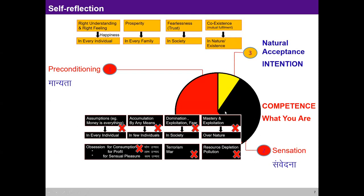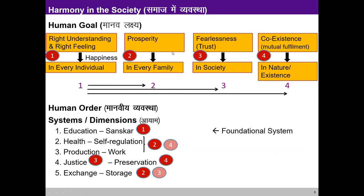Looking at the current state of society, we have landed somewhere that is certainly not naturally acceptable. Our natural acceptance is to have the human goal fulfilled: right understanding in every individual, prosperity in every family, fearlessness in society, coexistence in nature. But out of preconditionings and obsessions with sensations, we are doing something entirely different, which is not desirable, and we are all suffering. When we go to fulfill this human goal, five kinds of programs can be opted for.